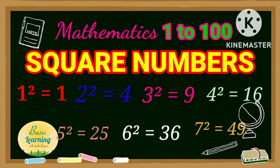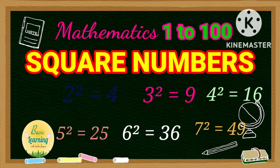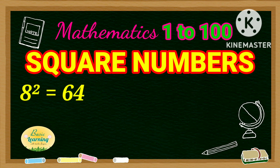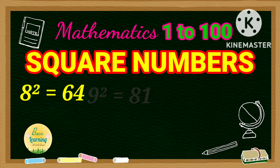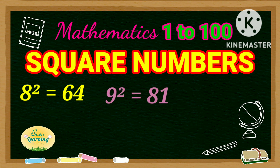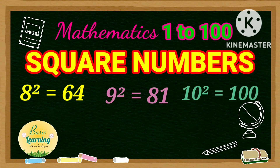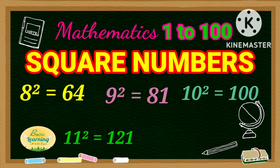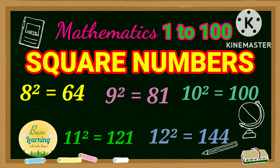Square of 7 is 49. Square of 8 is 64. Square of 9 is 81. Square of 10 is 100. Square of 11 is 121. Square of 12 is 144.